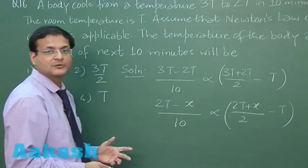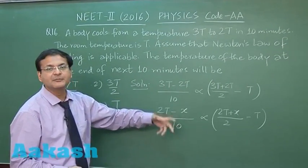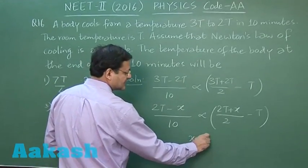This is what you have to have. These are the two equations you have. Now if you divide, then proportionality sign will be converted into equality sign. You solve it, you will be getting value of x as 3T by 2.